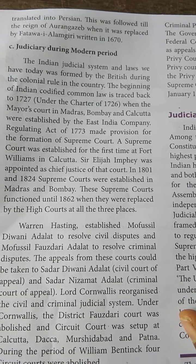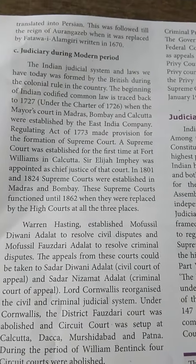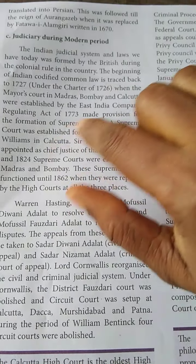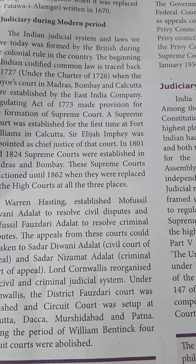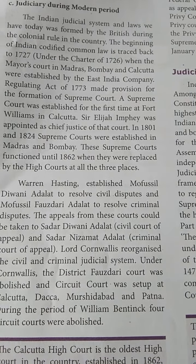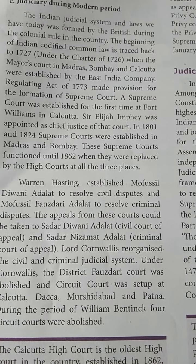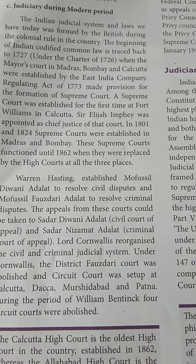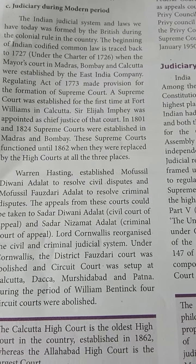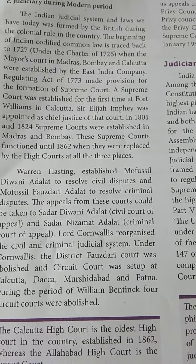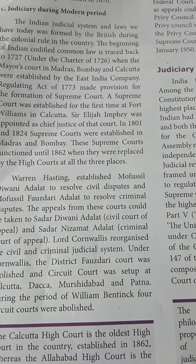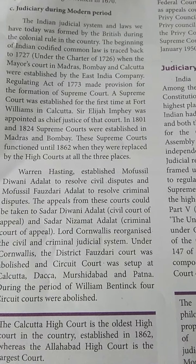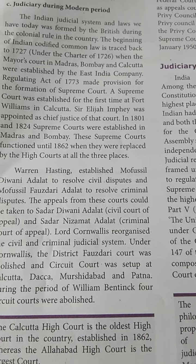Fatawa-e-Feruz Shahi was replaced by Fatwa-e-Alamgiri, written in 1670. Now, the modern period: the Indian judicial system and laws we have today were formed by the British during colonial rule. The beginning of Indian codified common law is traced back to 1727, when Mayor's Courts in Madras, Bombay, and Calcutta were established. The East India Company's Regulating Act of 1773 made provision for the formation of a Supreme Court, which was established for the first time at Fort William in Calcutta.